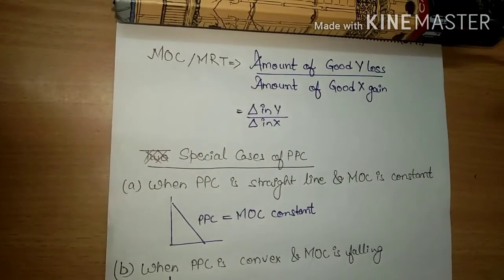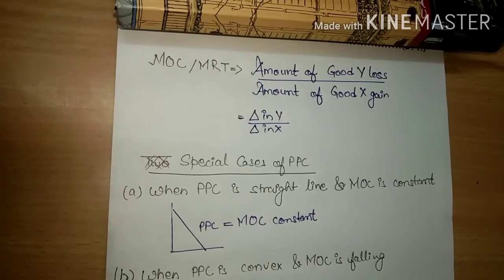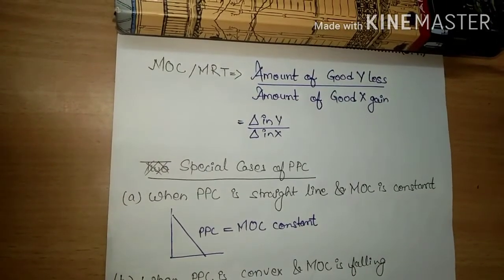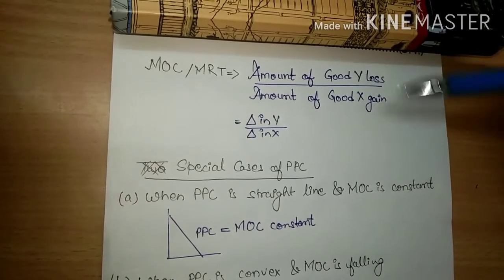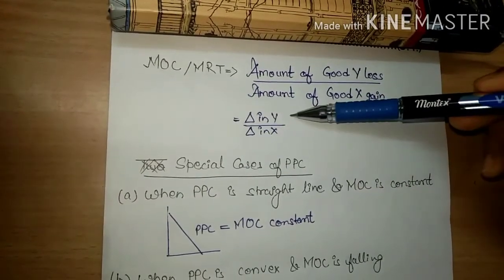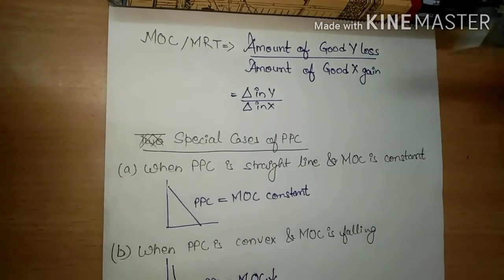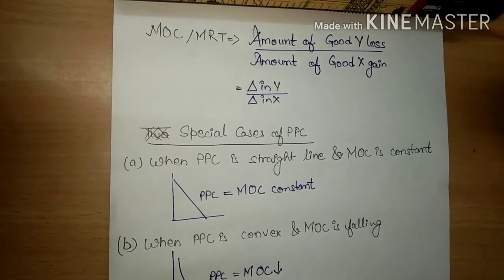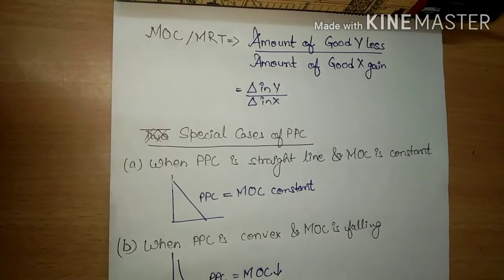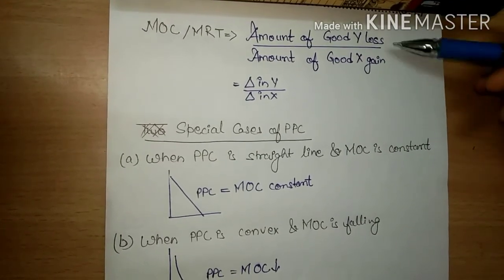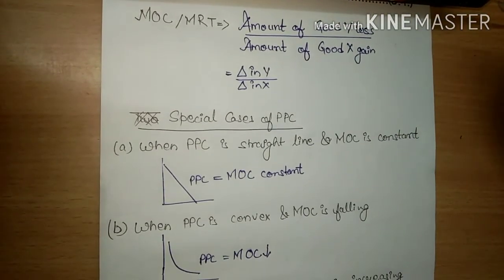Toh ab iske formula par dekhte hain — MOC ya MRT ka formula kya hai: amount of Good Y loss and amount of Good X gain. Toh change in Y by change in X. Yaad rakhne ki cheez: jo bhi loss ho raha hoga, usko aap log numerator mein rakhenge; aur jiska bhi gain ho raha hoga ya jisme expand kiya ja raha hoga, usko aap log denominator mein rakhenge. Bas itna hi tha MOC/MRT.